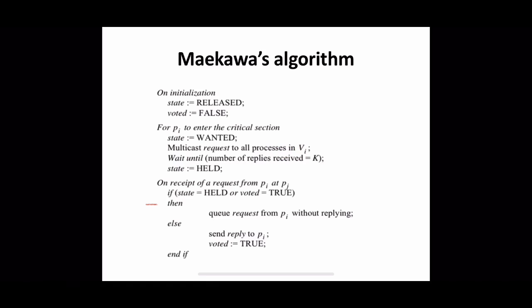Pi can enter the critical section only when all members in the voting set have replied — wait until the number of replies received is equal to k, where k is the length of the voting set. So it should receive replies from all members. Once it receives all these replies, it can now enter the critical section, so it changes its state to 'held'.